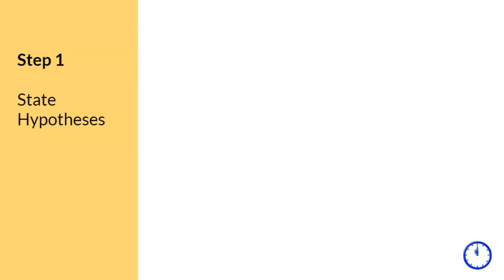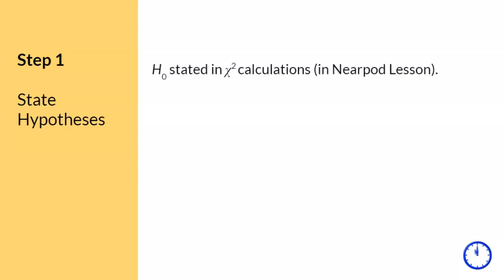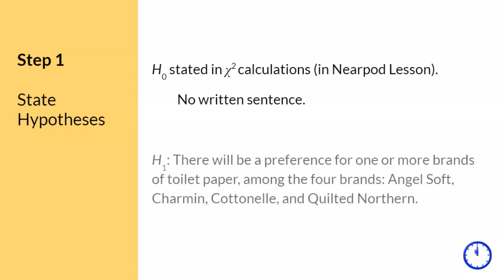Step 1. According to the research question, we will be using a null hypothesis of no preference, so the wording should reflect the word preference. The null hypothesis was already stated in notation when the chi-square was calculated in the Nearpod lesson — there is no written sentence for the null hypothesis. The research hypothesis in a written sentence will indicate that there will be a preference for one or more brands of toilet paper. It is important to be specific and clearly state one or more brands, the number of categories being studied, and the names of those categories. There is no notation for the research hypothesis.